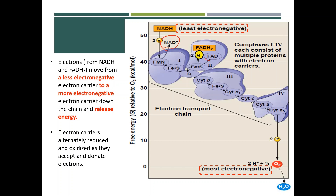The oxidized forms — NAD+ and FAD — are going to be reused again in glycolysis, pyruvate oxidation, and the citric acid cycle, where they carry electrons again to the electron transport chain. Basically, the electrons carried by NADH and FADH2 in the electron transport chain move from less electronegative carriers to more electronegative carriers, and through this process they release energy. In the next topic, we are going to look at what this released energy is used for.